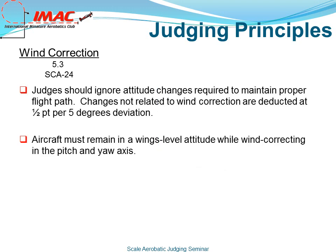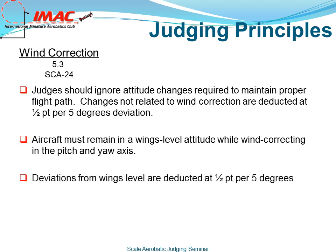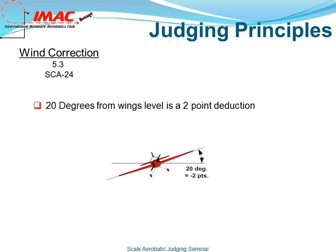Aircraft must remain in a wings-level attitude while wind correcting in the pitch and yaw axis. Deviations from wings level are deducted at a half a point per 5 degrees. 20 degrees from wings level is a 2-point deduction.